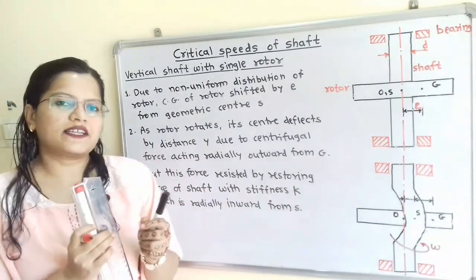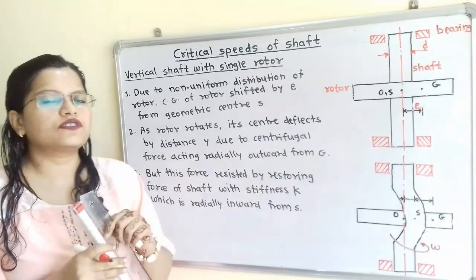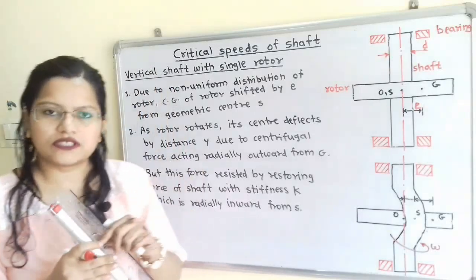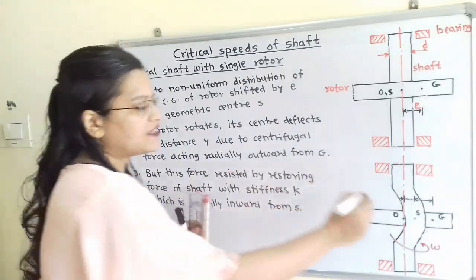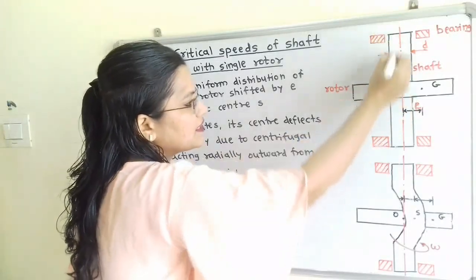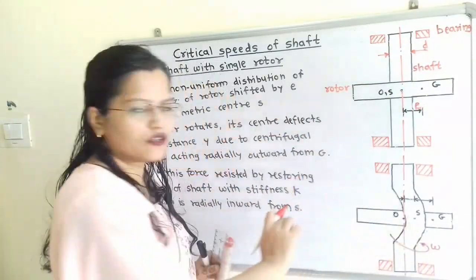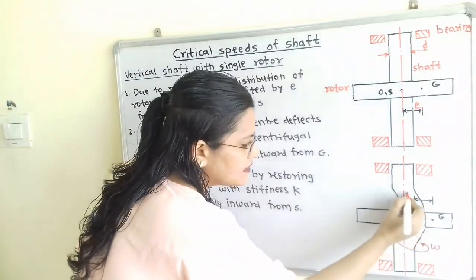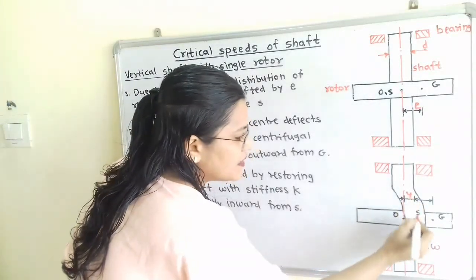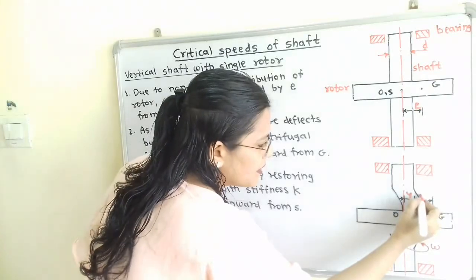The deflection occurs because of the centrifugal force acting in the radially outward direction passing through G. Initially point S lies on the center line, but as the rotor rotates with angular velocity omega, it is deflected by a distance Y. The distance between S and G remains the same, that is E.